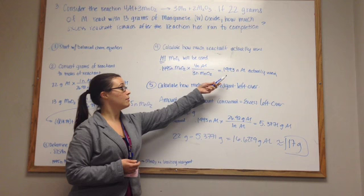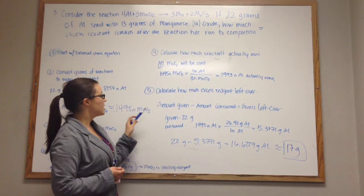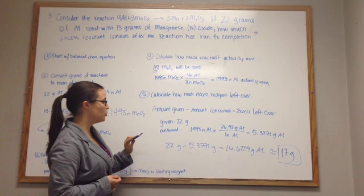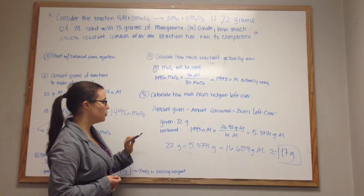Now that you know how many moles of Al actually reacts, convert that to grams, and how much excess reagent is left over. Subtract the amount you're given, which is 22 grams of aluminum, from the amount actually consumed, which is 5.37 grams of aluminum. Subtract those from each other, and you get 16.62 grams of aluminum that was actually used, about 17 grams.